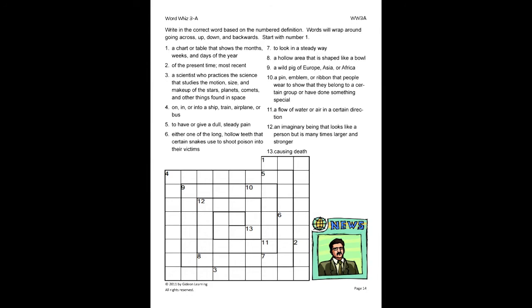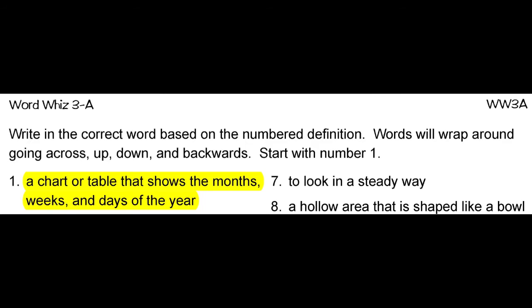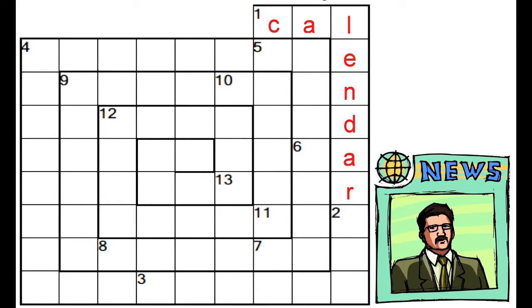Here, the student will write the correct word based on the number definition. Words will wrap around going across, up, down, and backwards. Start with number one, a chart or table that shows the months, weeks, and days of the year. Since we know this is the definition for calendar, we will neatly write calendar where the number one is located on the puzzle.